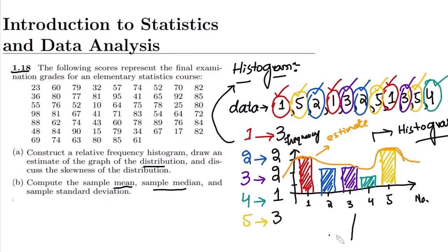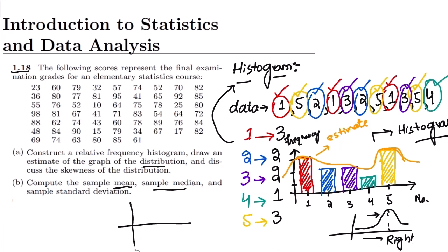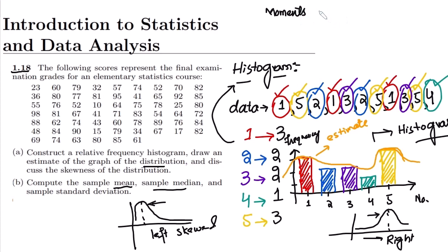For example, if I have a distribution where data points are more concentrated toward the right side, that is called right-skewed. Similarly, if I have another distribution where most of the data samples are concentrated to the left side, that is called left-skewed. We have seen skewed data, and in our previous videos we discussed the moments of distribution.